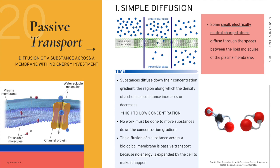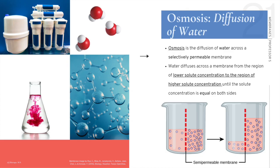In simple diffusion, two sides separated by a permeable membrane begin with a concentration gradient — the higher concentration on the extracellular side. The molecules begin to diffuse and will continue until equilibrium is reached. Equilibrium does not mean equal concentration; it means equal rates of diffusion — just as many molecules are moving into the cell as are moving out.